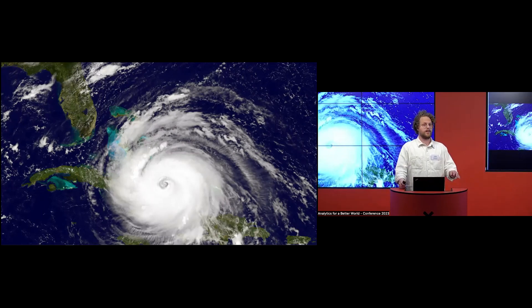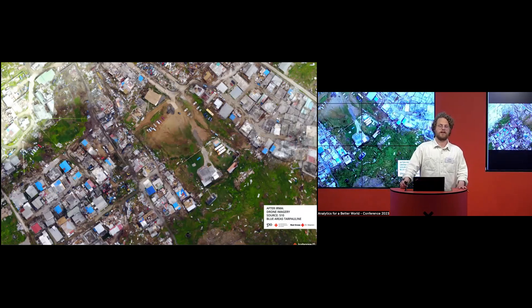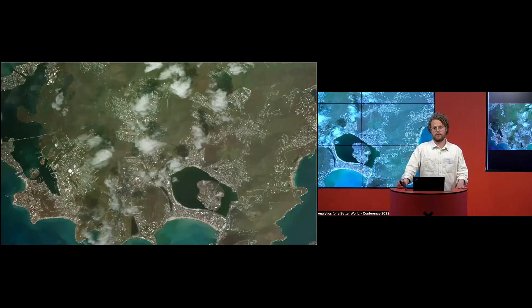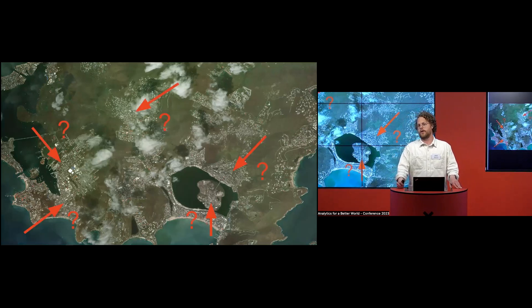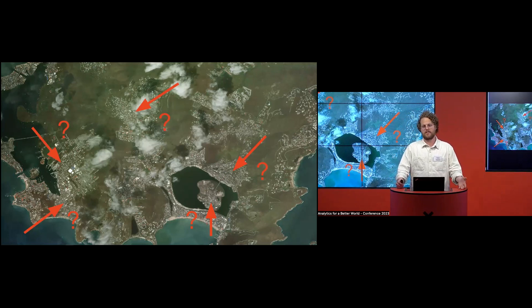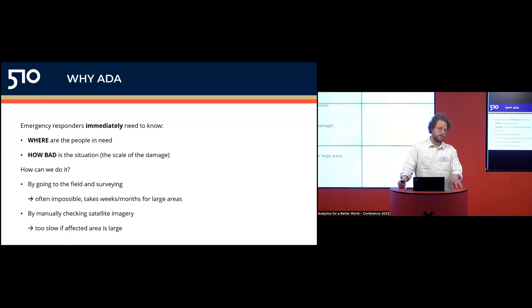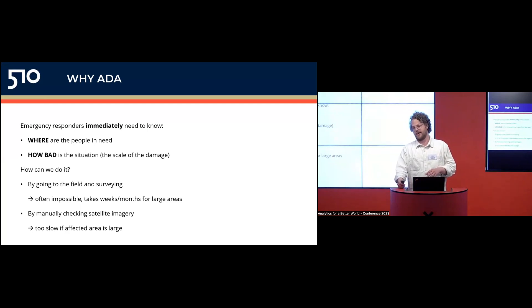Imagine a disaster hits — for example, a hurricane. After the hurricane passes, the affected area often looks like this: a lot of damage, widespread debris, and the affected area can be very big, like an entire island. In these cases, it's not necessarily known to emergency responders where the impact has been biggest and which areas need to be prioritized — where do we need to get to fastest to offer help.